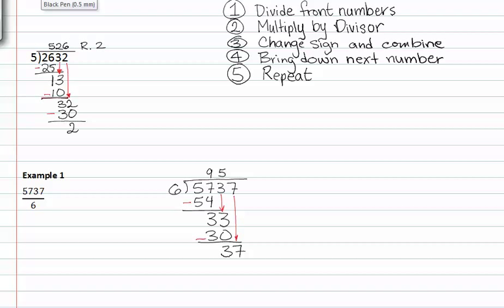Six times six is thirty-six with a remainder of one.